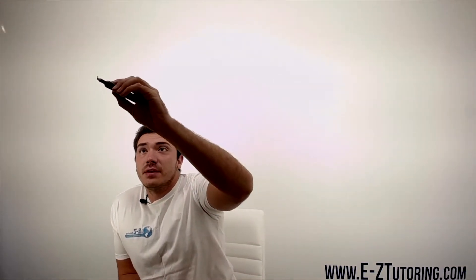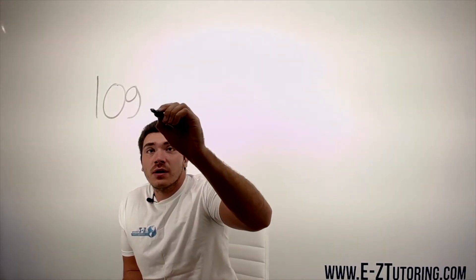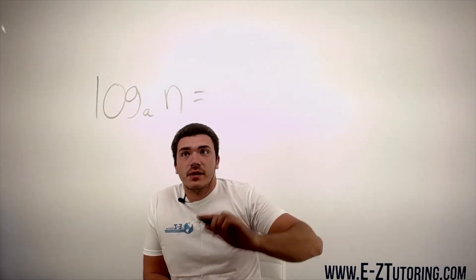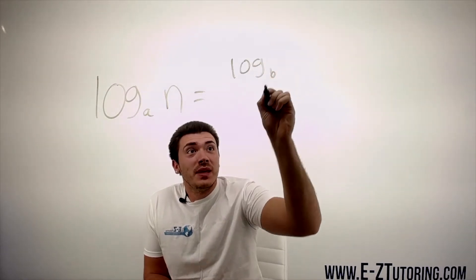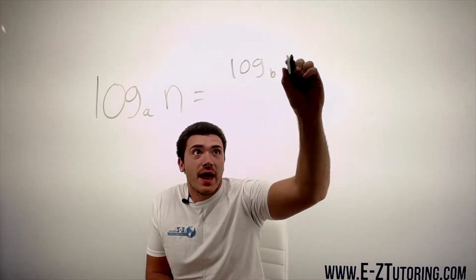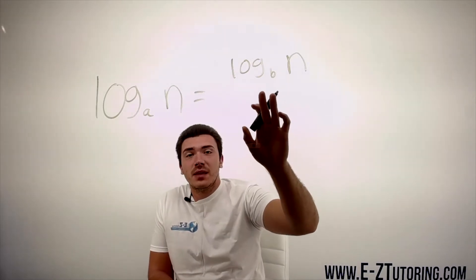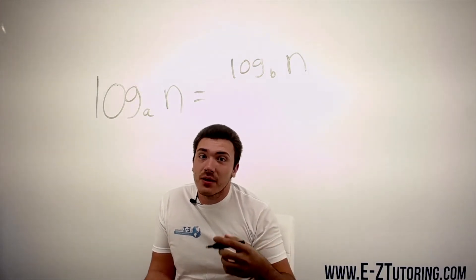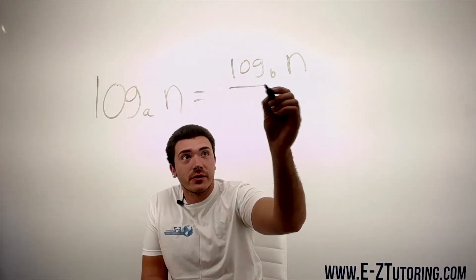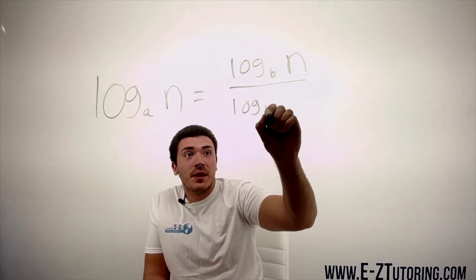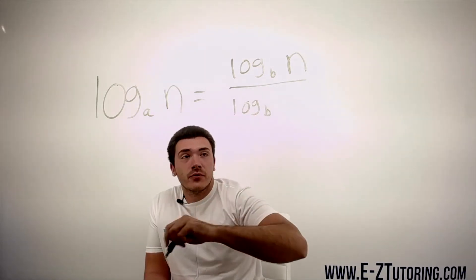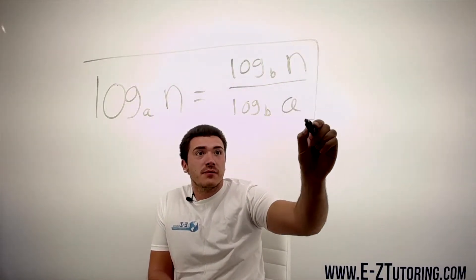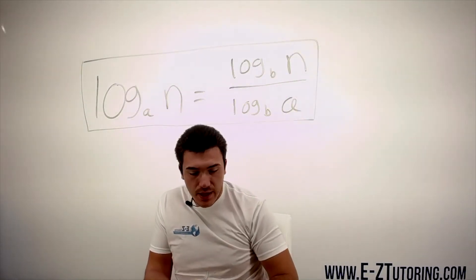So the formula for this is: suppose you have log base a of n, then you can rewrite this as log base b of n. Now this base b can be any base you want, but in this case we're going to choose base 10 because we want to be able to plug it into our calculator, and you divide this by log base b of your base a. So this is your formula, and this is the formula we're going to follow for our logarithms.